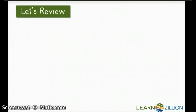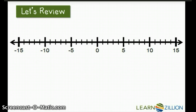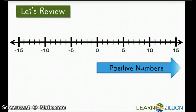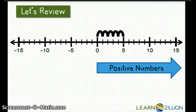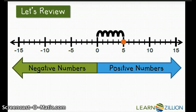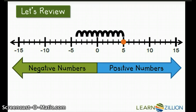Let's review. Positive numbers are to the right of 0 on the number line. We know that 5 is 5 units in the positive direction on the number line. Negative numbers are to the left of 0 on the number line. We know that negative 5 is 5 units from 0 in the negative direction.